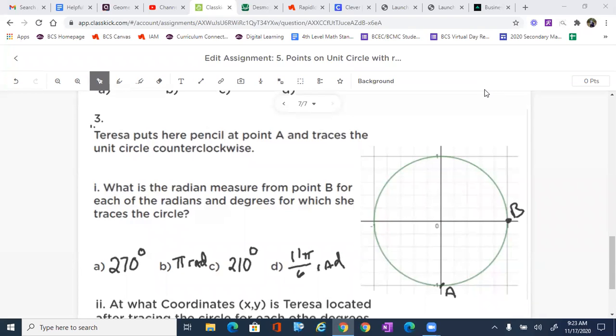All right, we're going to be focusing in on the unit circle and making some rotations and then locating points on that unit circle from a different reference point. Teresa puts her pencil at point A and traces the unit circle counterclockwise. To establish that direction, remember counterclockwise is going against the normal flow of the clock. What is a radian measure from point B? So our reference is going to be point B for each of the radians and degrees for which she traces the circle.